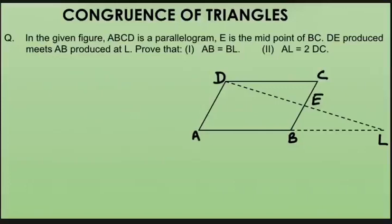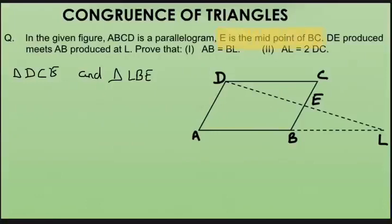To prove sides or angles equal, we first need to prove two triangles congruent. We have two triangles here: triangle DCE and triangle LBE. We need to find three equal parts. Since E is the midpoint of BC, CE equals BE — that is given.